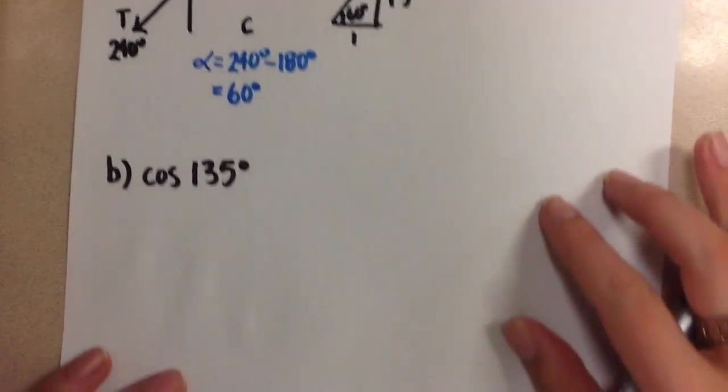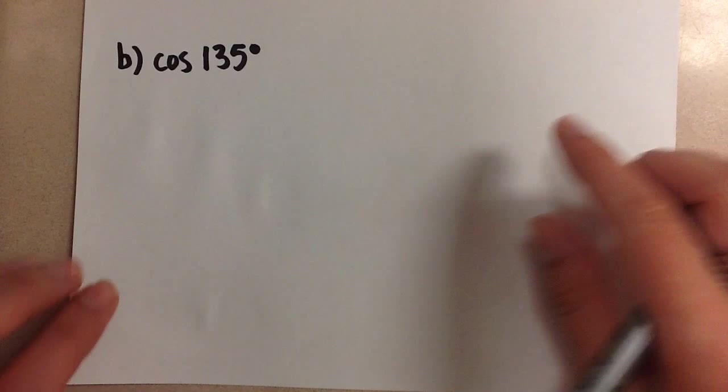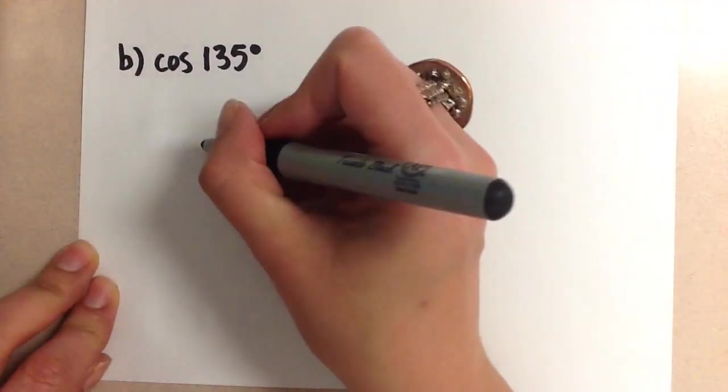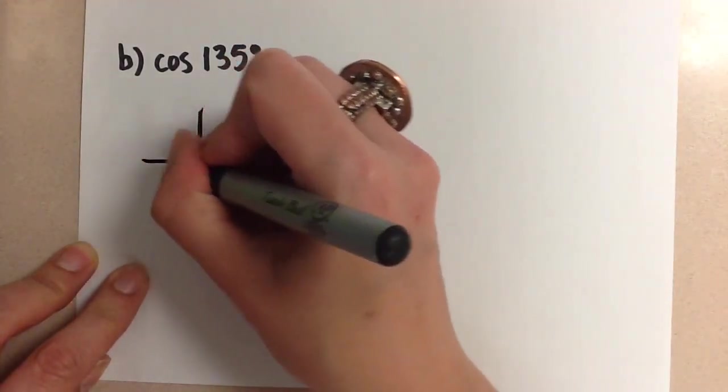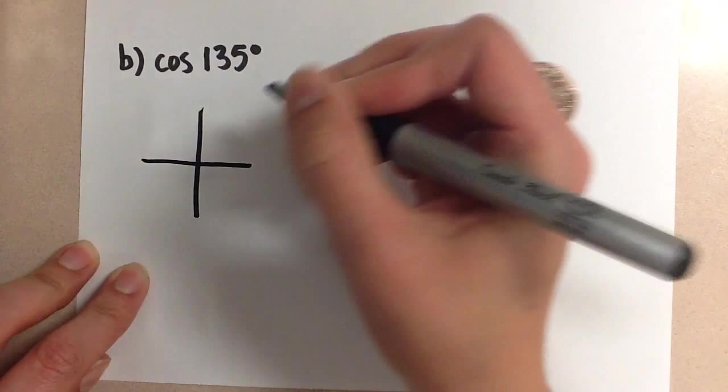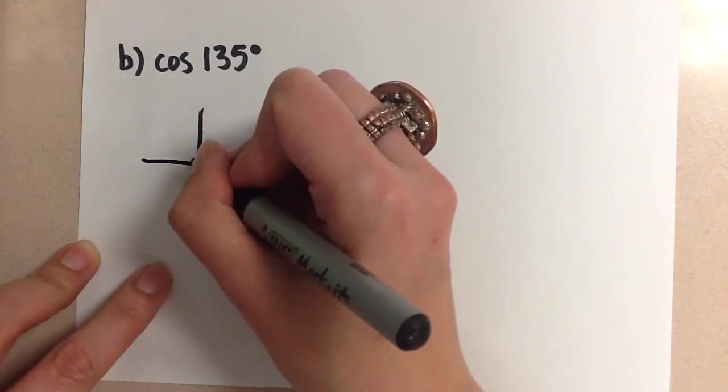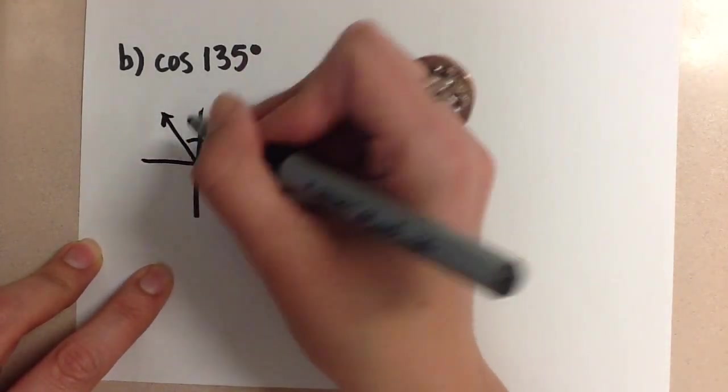So let's do it again now for cosine of 135 degrees. Again, we start off by doing a quick sketch of the angle 135 degrees. That lands us in the second quadrant if we look this way.